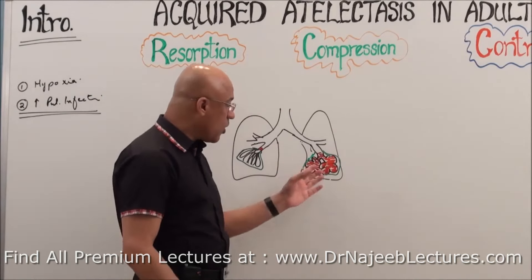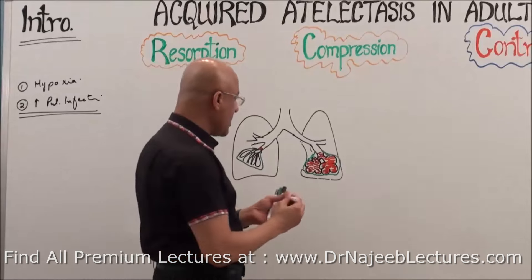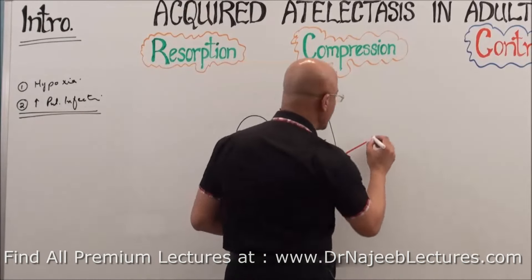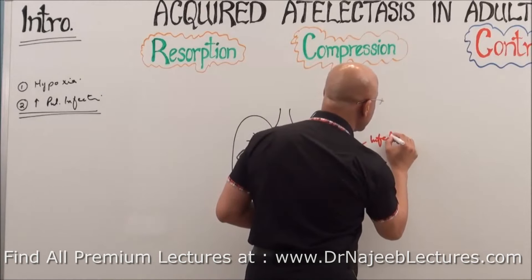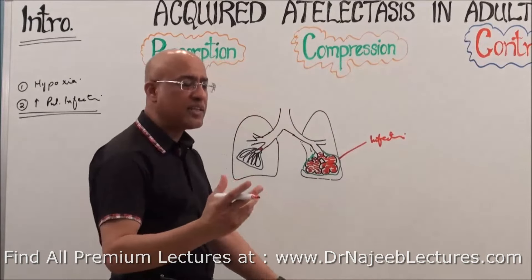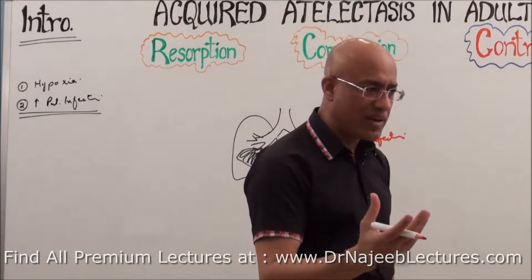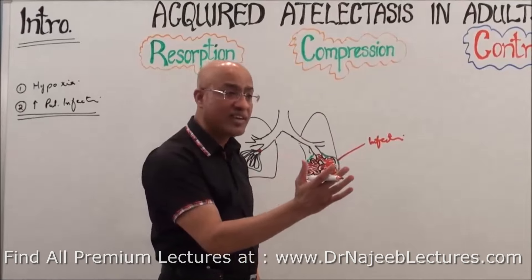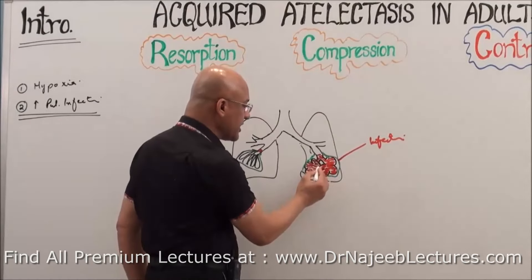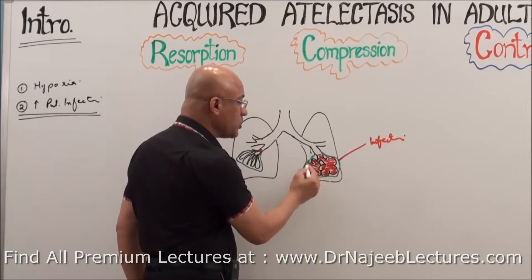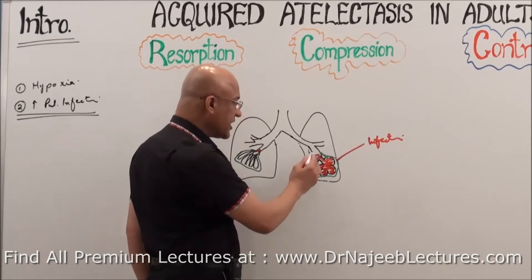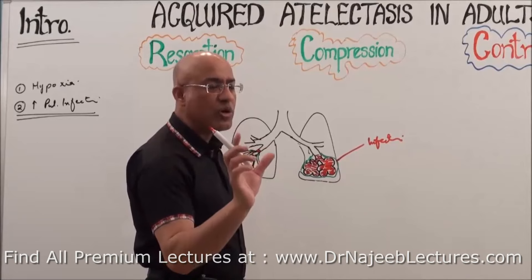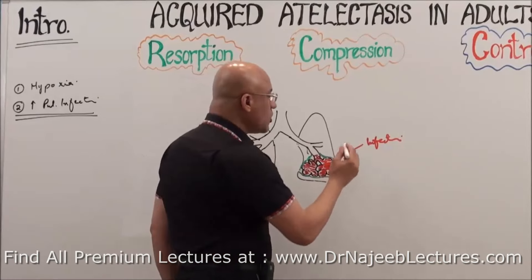When can consolidation occur? Consolidation can occur classically in pulmonary infections — pneumonia. In pneumonia, there is exudative fluid which may accumulate in air spaces, air is displaced, and pus or suppurative exudate accumulates there. So we say there is a pneumonic patch or there is a consolidation. But it's not only in pneumonia.